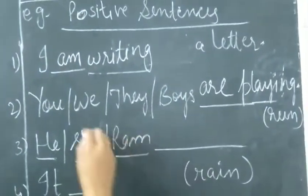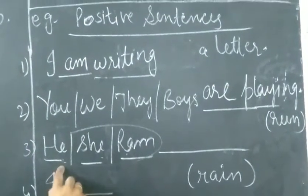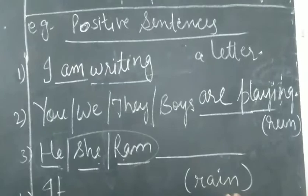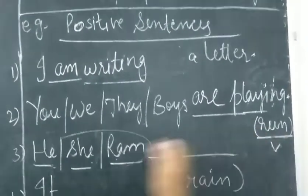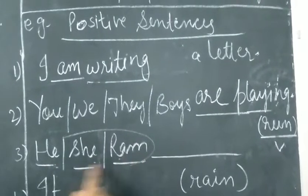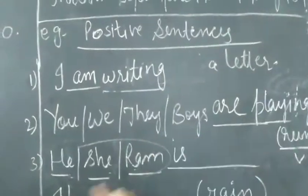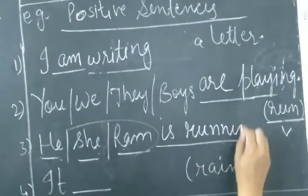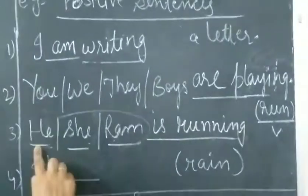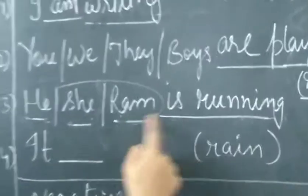Then comes he, she, ram. I have taken all the third persons together here just to give you example here. He, she, ram. Here verb is given run. So, he, she, ram. All these are singulars. With singular, what we are using? Is. He, she, ram is running. We can do these one by one also. He is running. She is running. Ram is running.